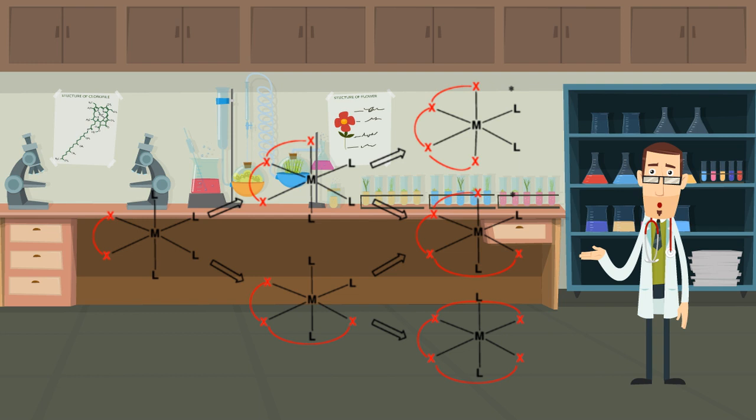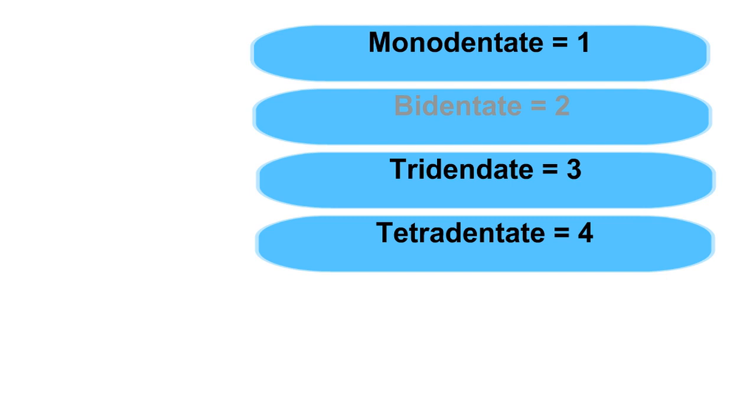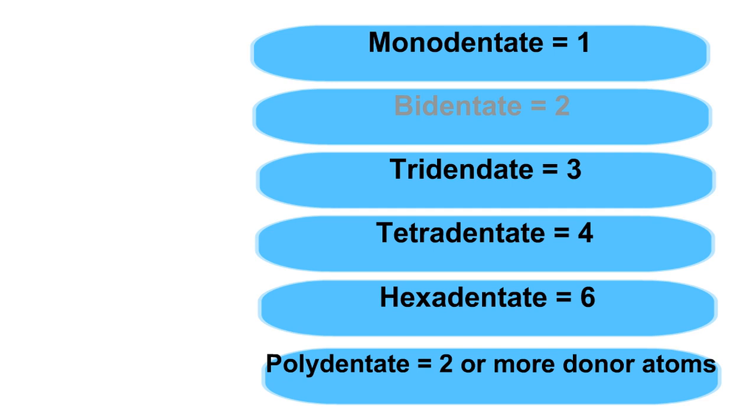Part 1. Ligand denticity. It refers to the number of donor groups in a single ligand that binds to a central metal ion in a coordination complex. For example, monodentate, one donor atom, polydentate, more than one donor atom, as in bidentate 2, tridentate 3, tetradentate 4, and so on.